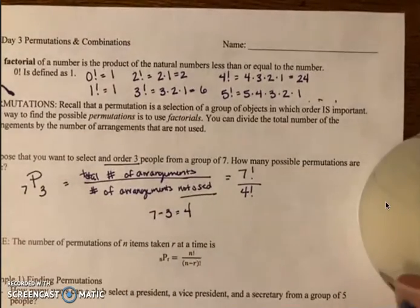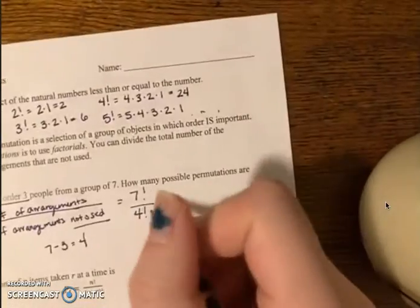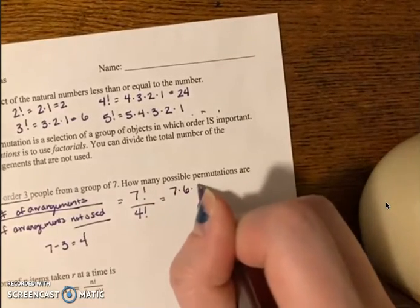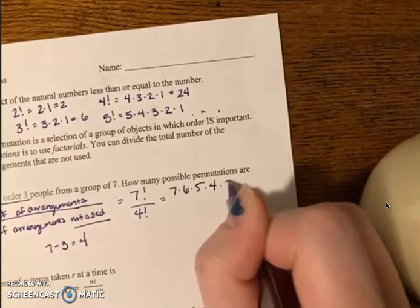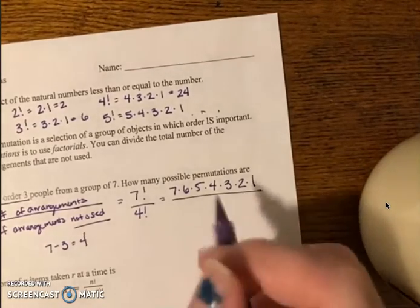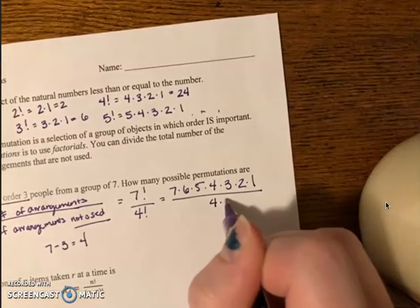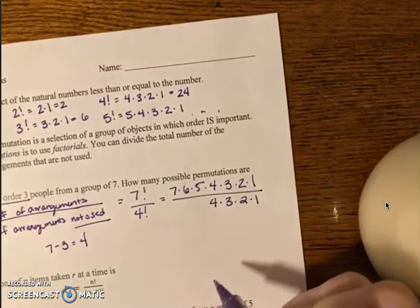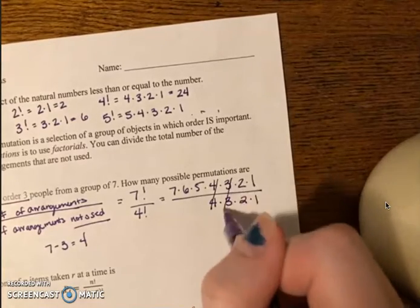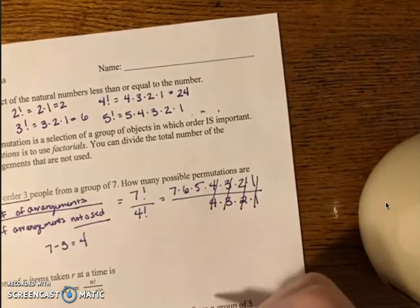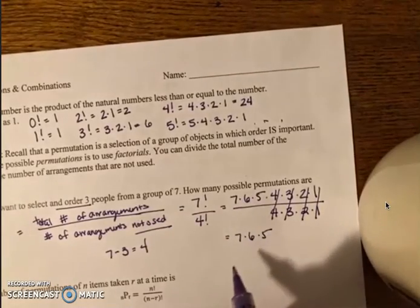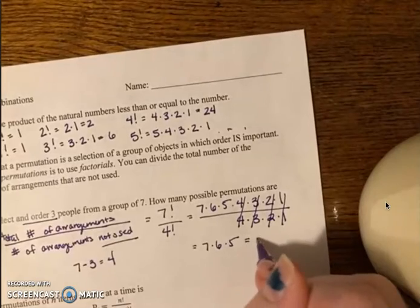So we can write that as seven factorial over four factorial. I'm going to expand those factorials so we can solve. Seven factorial will be 7 times 6 times 5 times 4 times 3 times 2 times 1, over four factorial, which is 4 times 3 times 2 times 1. Now the reason why I write it up this way is because now you can see the fours, threes, twos, and ones cancel. So I'm just left with 7 times 6 times 5, and 7 times 6 times 5 is 210.